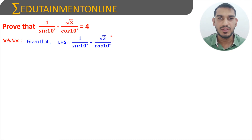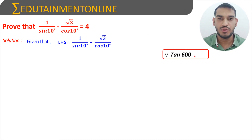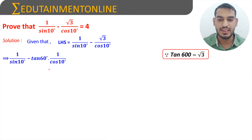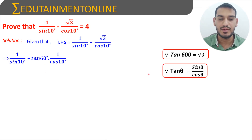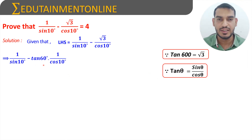We know that tan 60 degrees is equal to root 3, so in place of root 3 we will substitute tan 60 degrees. Since tan theta equals sine theta by cos theta, we can write tan 60 degrees as sine 60 degrees by cos 60 degrees.